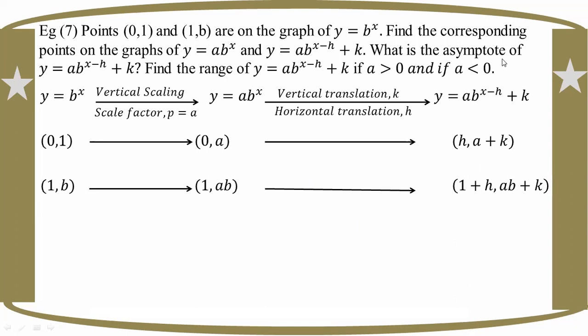The asymptote is y = 0 for the base function. After applying the transformations, we track how the points (0,1) and (1,b) transform through each step.